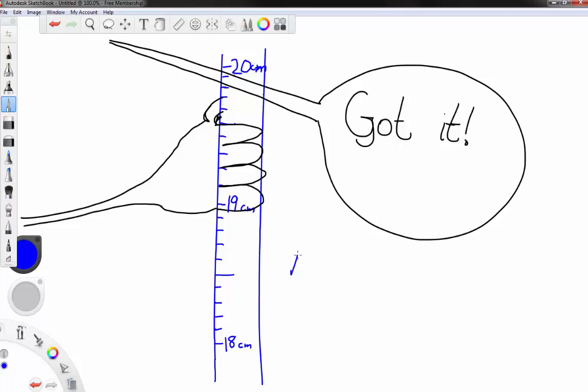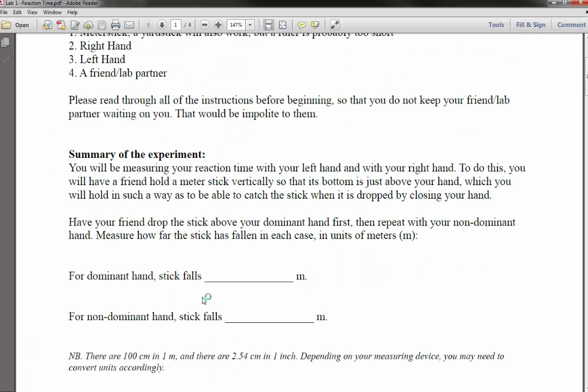So we'd write delta y is equal to 19.5 centimeters and you're supposed to convert that to meters. So 100 centimeters is equal to 1 meter. Basically if you take this decimal point and move it over 1, 2, then you've converted from centimeters into meters. So moving this thing over two we'd have 1, 2, that's 0.195 meters. So that's what you'd be recording in this first line here where it says how far does the stick fall before you catch it. And then you repeat for the non-dominant hand here.